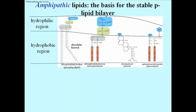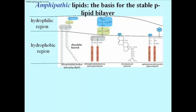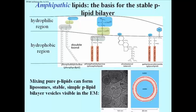Here's a glycolipid — in this case it's a galactocerebroside, so it's an important brain cell lipid. But all cells have glycolipids: lipids with a sugar attached rather than a phosphate group.